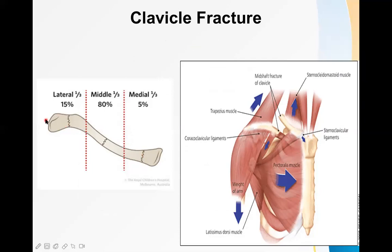Looking at the picture, this is the clavicle bone. We have the medial one-third, middle one-third, and lateral one-third. The medial one-third is also known as the proximal one-third, and the lateral one-third as the distal one-third. Proximal means towards the sternum; lateral means towards the scapula. So we roughly divide the clavicle into three parts.